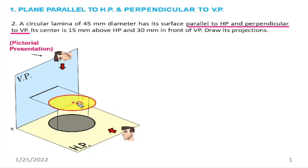The center is 15 mm above the horizontal plane and 30 mm in front of the vertical plane. When a plane is parallel to HP and perpendicular to VP, the top view will be the true shape and the front view will be a line.